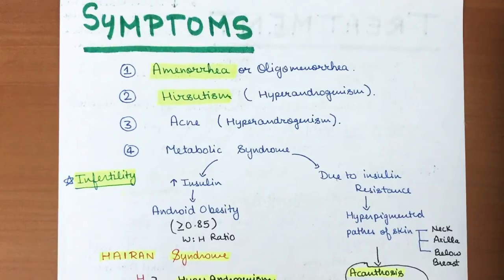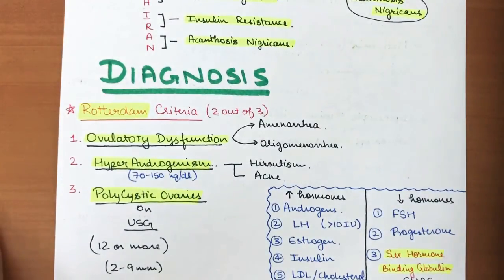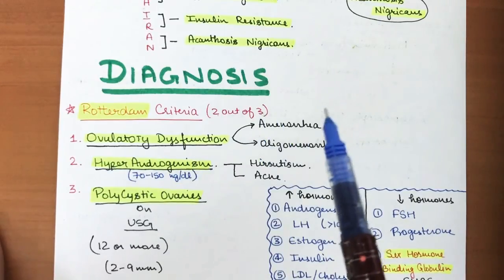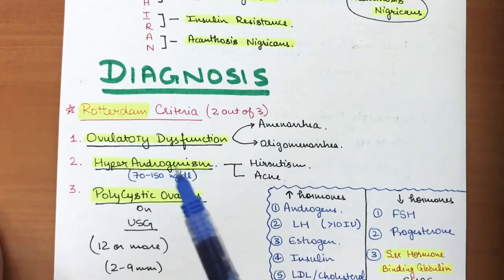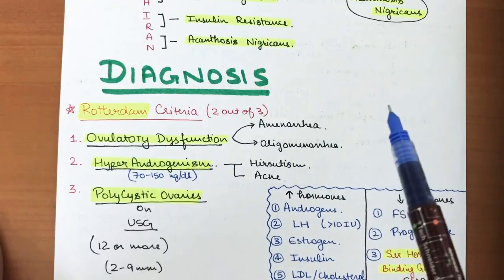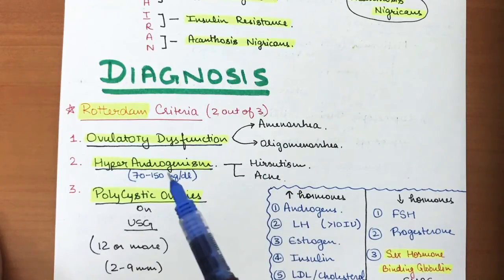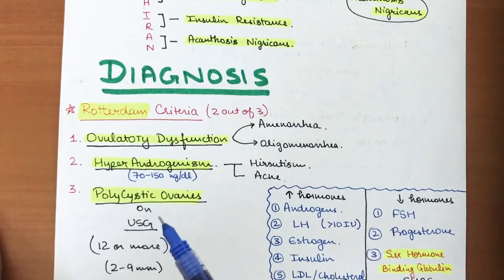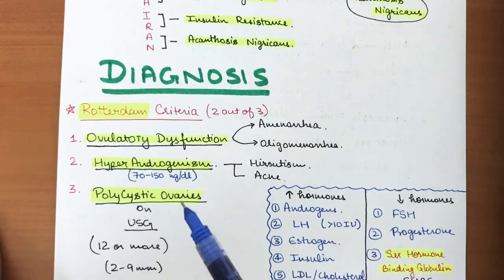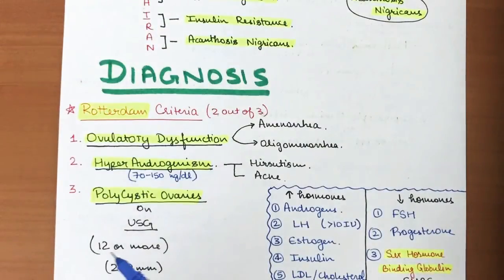The main diagnostic criteria is the Rotterdam criteria, which checks three things: first, ovulatory dysfunction — amenorrhea or oligomenorrhea; second, hyperandrogenism — testosterone levels of 70 to 150 nanograms per deciliter leading to hirsutism and acne; and third, polycystic ovaries on ultrasonography or transvaginal sonography, showing multiple cysts of 2 to 9 mm in size.